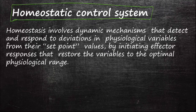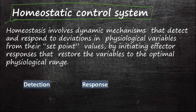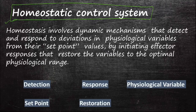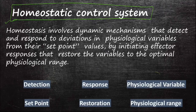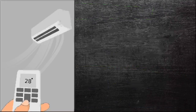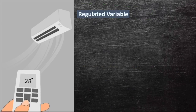Homeostasis involves dynamic mechanisms that detect and respond to deviations in physiological variables from their set point values, by initiating effector responses that restore the variables to the original optimal physiological range. We are going to understand this using the example of an air conditioner. The air conditioner in your room maintains a variable — room temperature. Let's say the room temperature is 30 degrees.